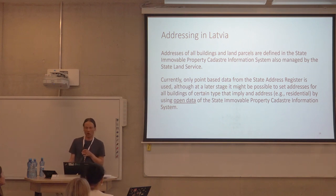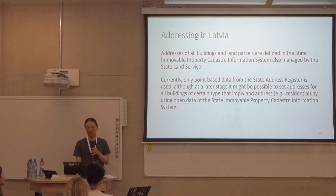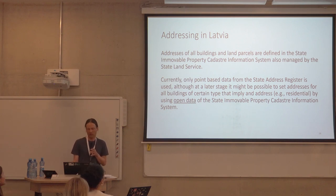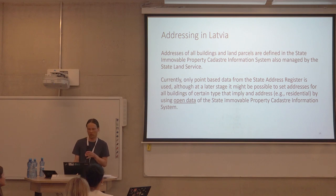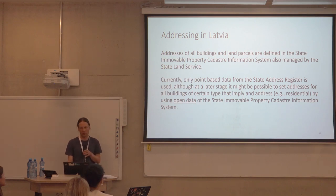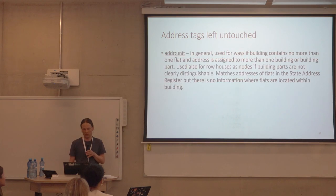Addresses of all buildings and land parcels are also defined in the state land service data in the state immovable property information system. But currently only point-based data from the state address register is used. At a later stage it might be possible to set addresses for all buildings of certain types — for example, residential ones — by using open data from that information system.